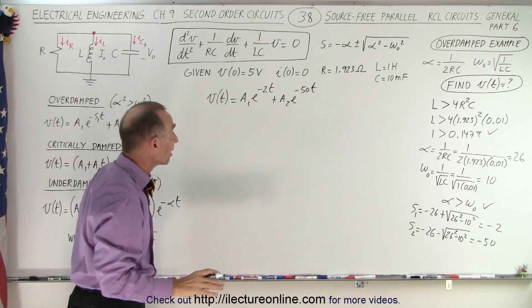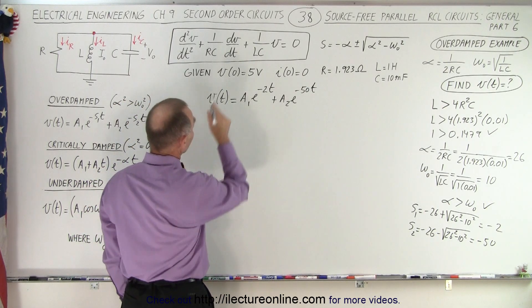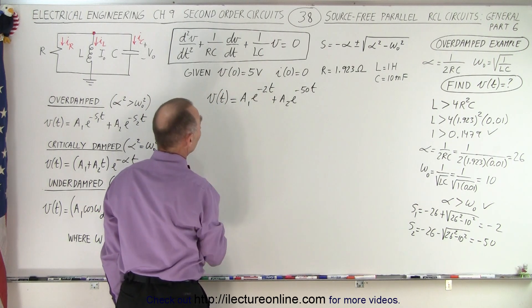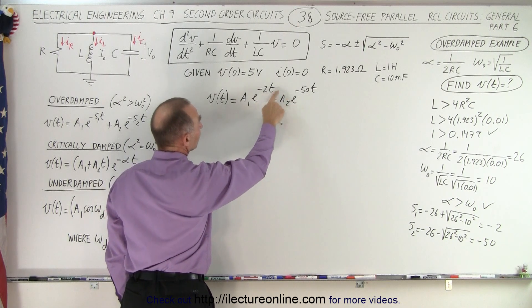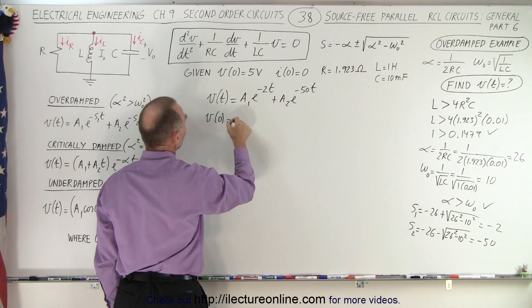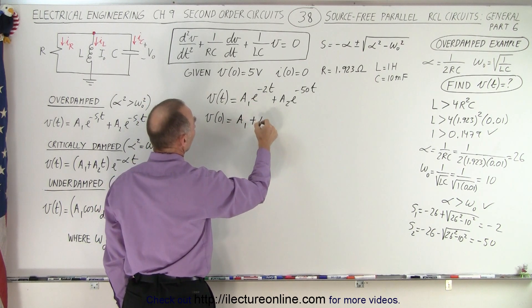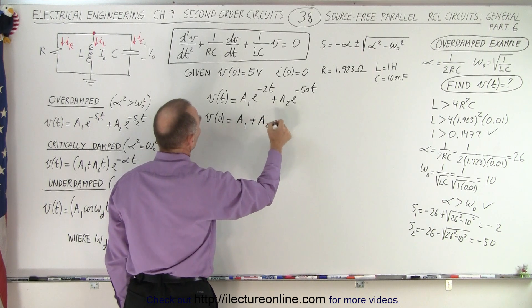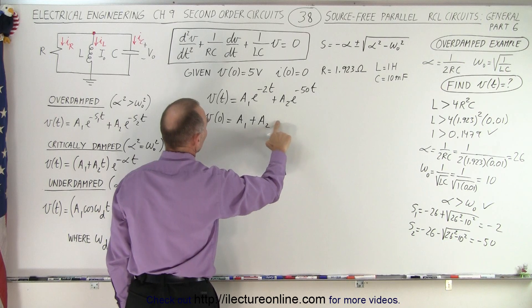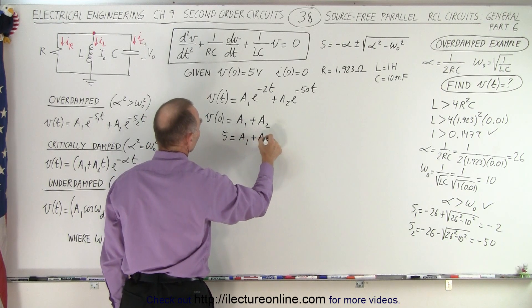Now we still have to find the values for A1 and A2. We are given that the initial voltage when time equals zero is equal to 5. When T equals 0, e to the zero power equals 1, so V(0) equals A1 plus A2, and we were told that was equal to 5 volts. So our first equation is: 5 equals A1 plus A2.